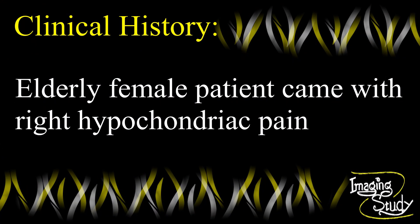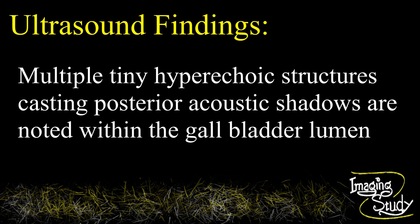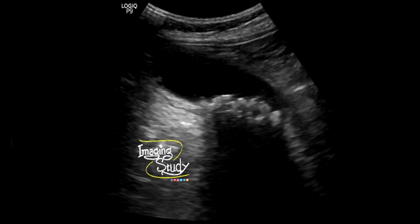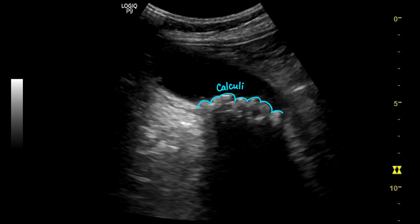An elderly female patient came with right upper abdominal pain. On ultrasound, multiple tiny echogenic structures casting strong posterior acoustic shadows are noted at the gallbladder lumen. Here you can see the tiny hyperechogenic structures at the gallbladder lumen at the region of the neck, casting posterior acoustic shadows.